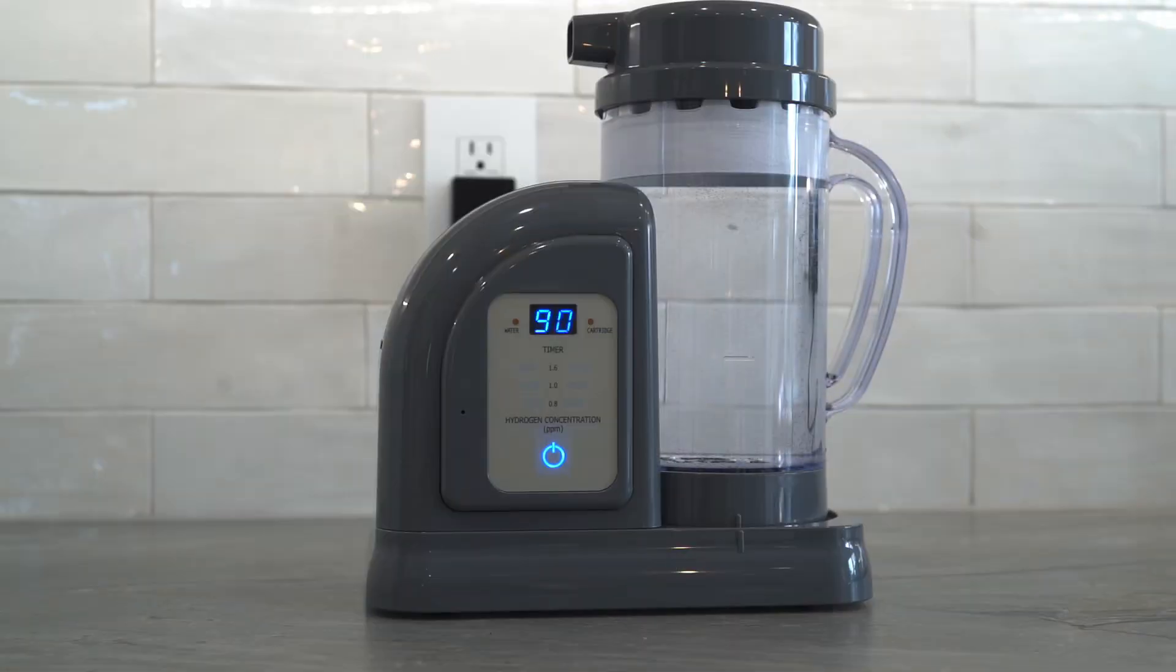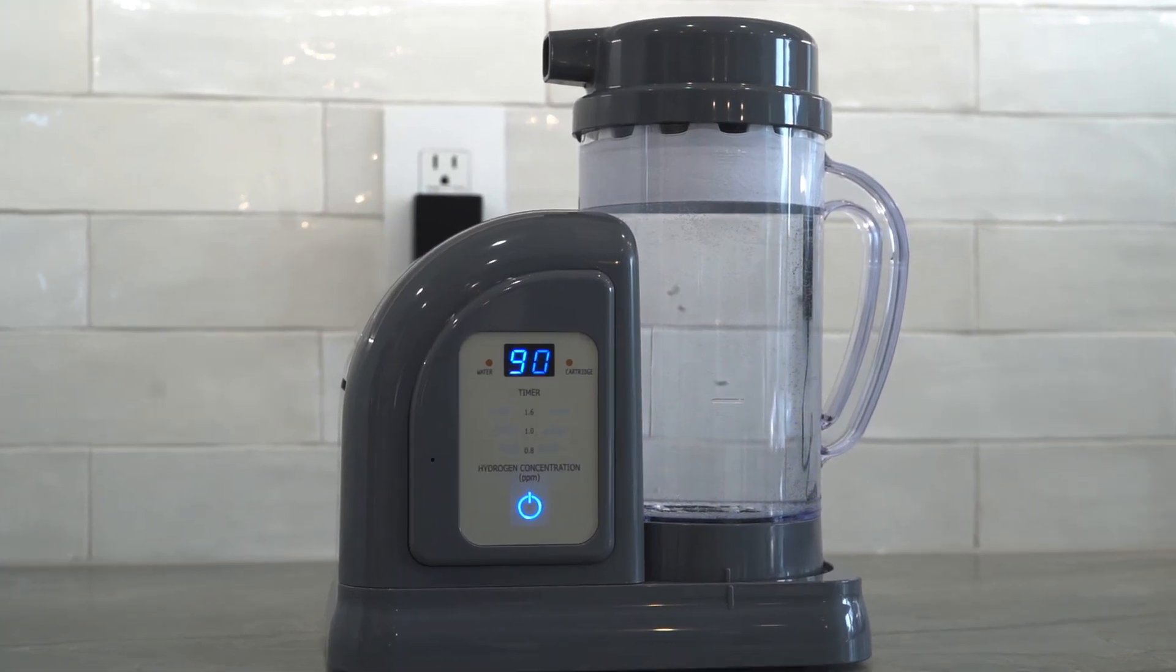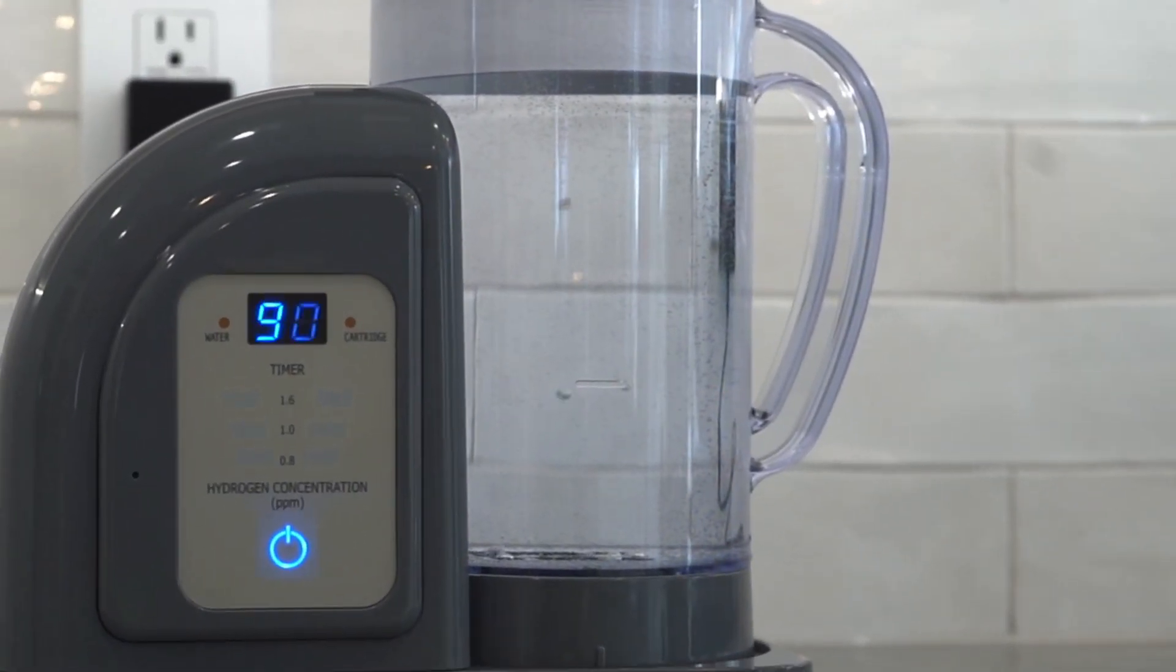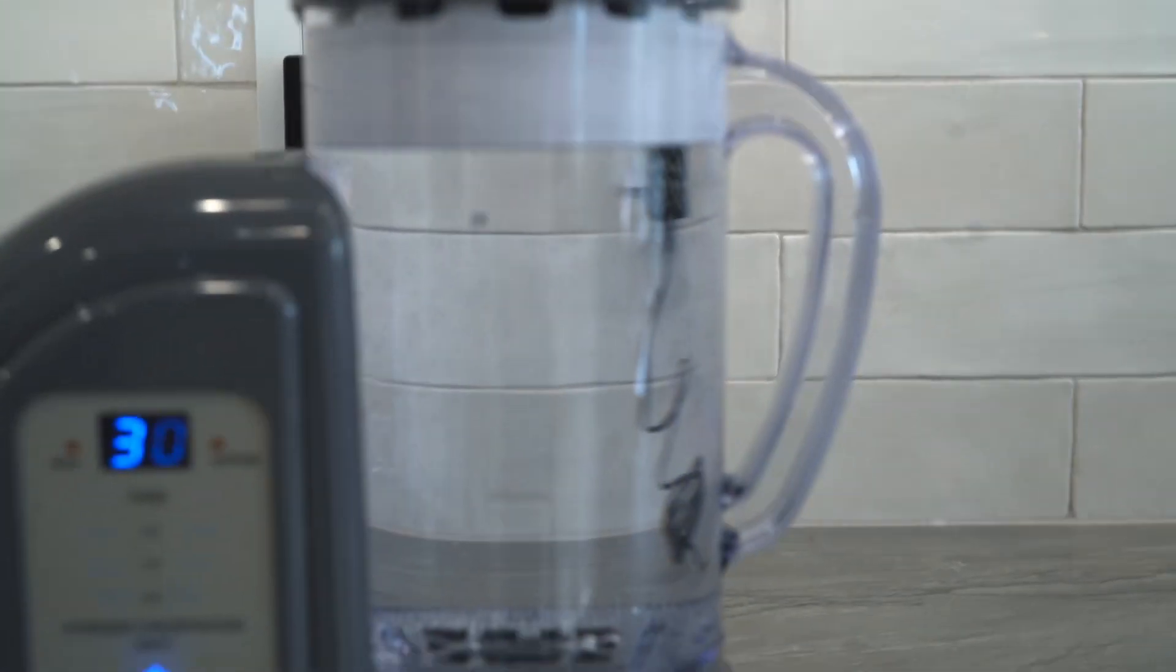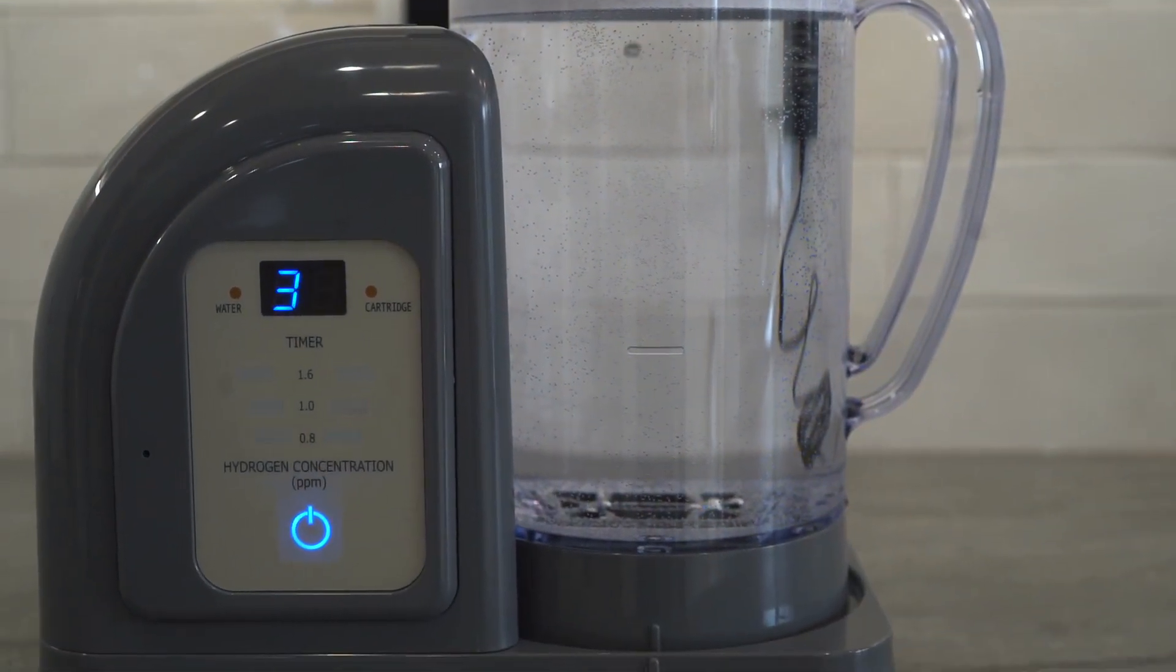When in the 90-minute mode, 90 will appear on the countdown timer and you will see a small amount of mist-like hydrogen gas and some bubbles rising into the pitcher. Once the membrane has been prepared, the water will be fully saturated in 30 minutes.